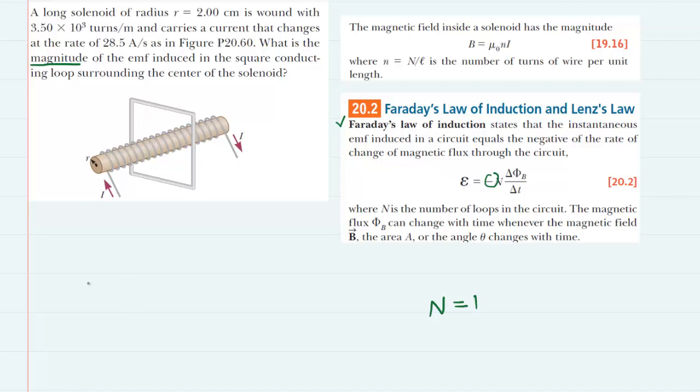So we're going to rewrite Faraday's law of induction in the following manner. We're going to have the induced EMF is equal to simply the change in magnetic flux divided by the change in time.